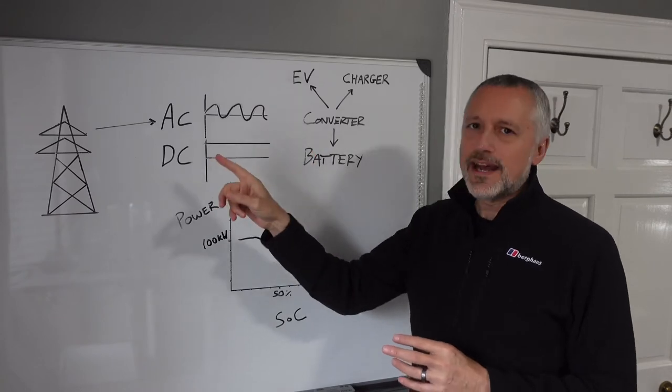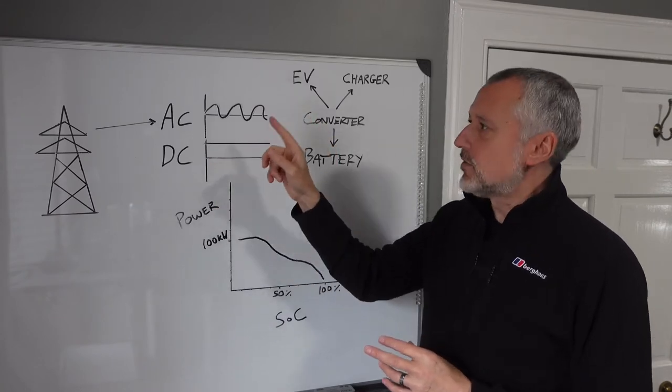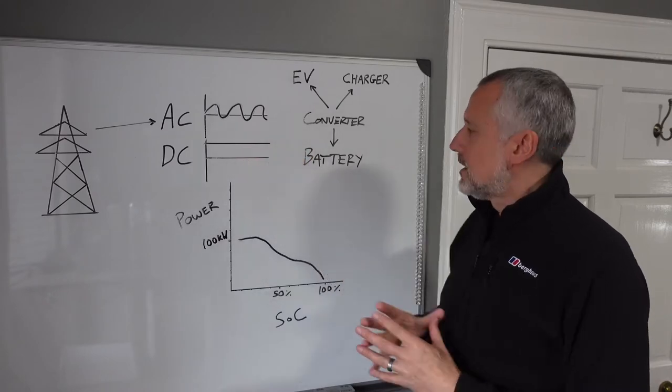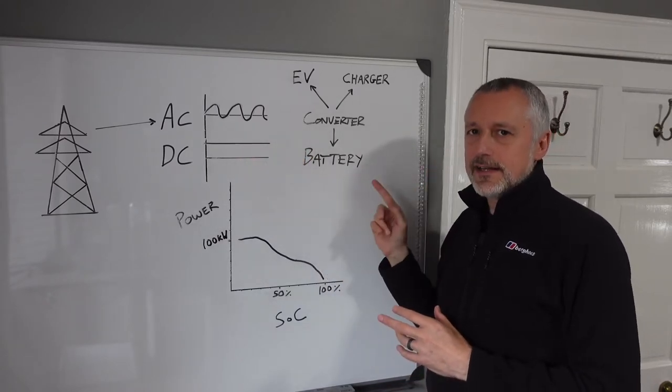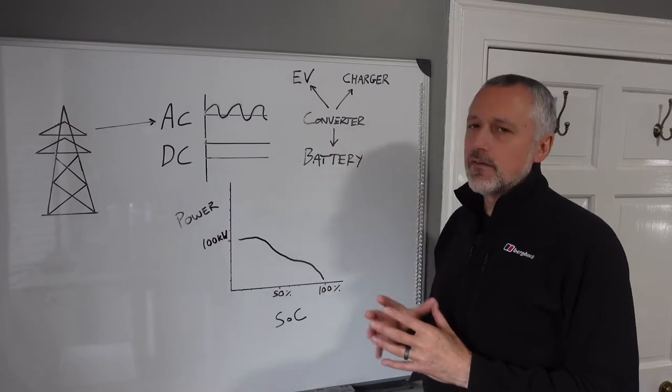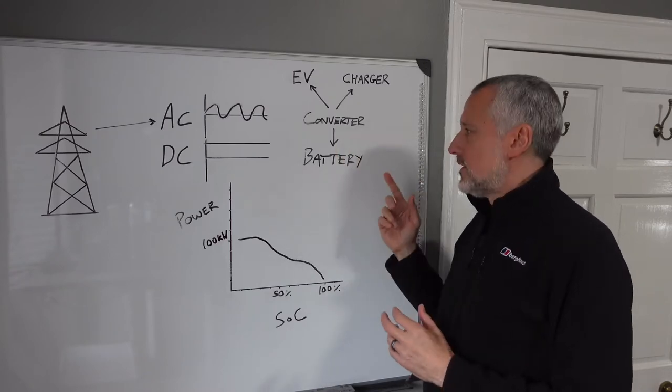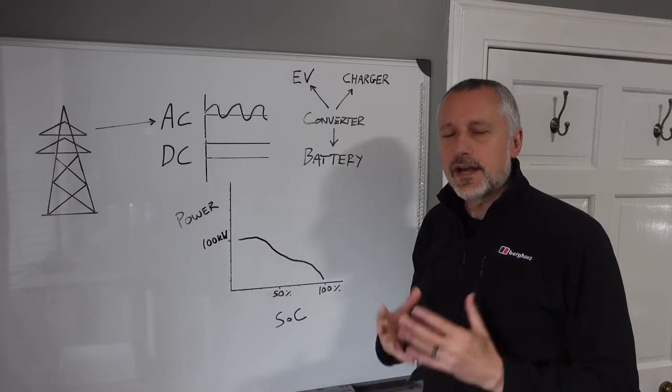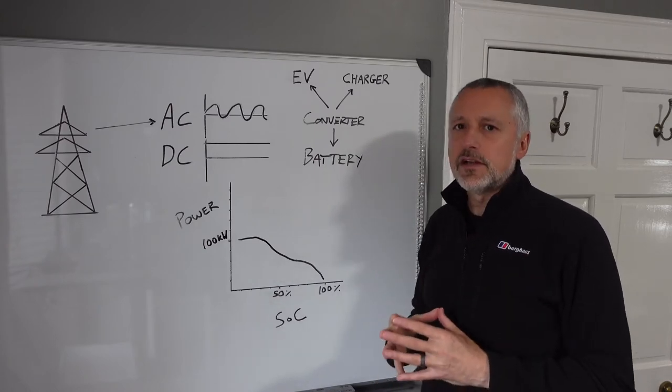Now the electricity we get from the national grid is always AC alternating current, but batteries store DC. So the AC current that comes from the grid needs to be converted into DC to be able to be stored in batteries. So how does that happen? Well, it happens in two ways.